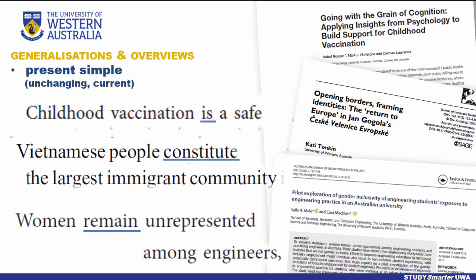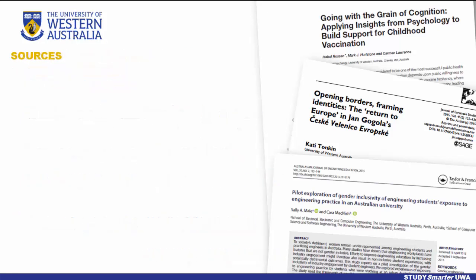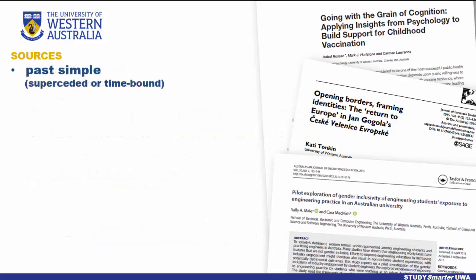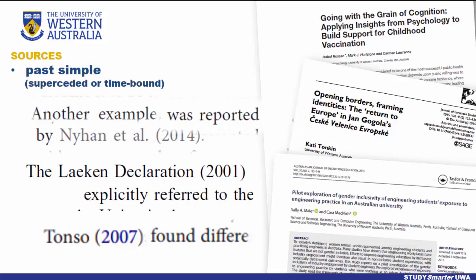As you turn your attention to other sources, whether as part of a dedicated literature review or as part of ongoing engagement with existing literature, you have a few options. If the source you are citing has continued relevance in the field, or for your specific study, you would typically use the present perfect form. Whereas if the source has been superseded in some way, or is specifically time-bound, you would use the past simple.